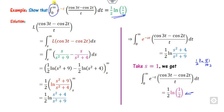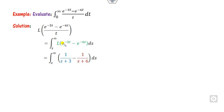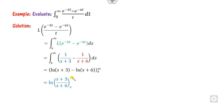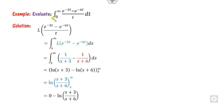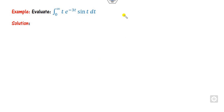Remember: whenever the limits are 0 to infinity, only then can you use the Laplace transform. Again, this is division by sin with limits 0 to infinity. Starting from the Laplace transformation and integrating, you get log. Infinity/infinity means apply L'Hôpital's rule, giving log(1) = 0 minus log((s+3)/(s+6)). Adjusting the negative gives log((s+6)/(s+3)). By the definition of the Laplace transform, comparing with e^(−st), substituting s = 0 gives the right answer: log(2).